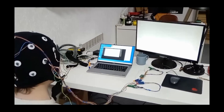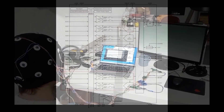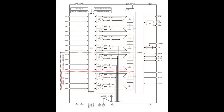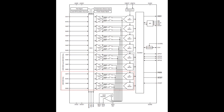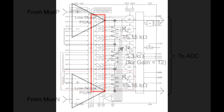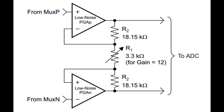The analog inputs are fully differential. They are connected directly to an integrated programmable gain amplifier, which has seven different gain settings. Each ADS1299 channel has a 24-bit delta-sigma ADC.